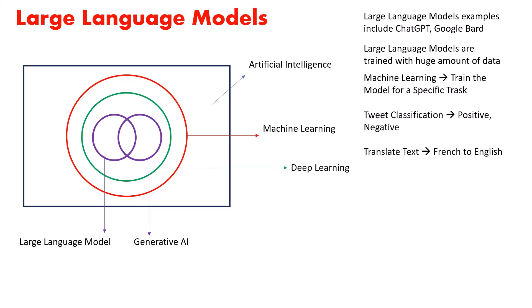In machine learning, you may have worked with algorithms like decision trees and random forests. A machine learning model is trained for a specific task — for example, classifying tweets as positive or negative, or translating text from French to English. Each machine learning model can do a single specific task only.